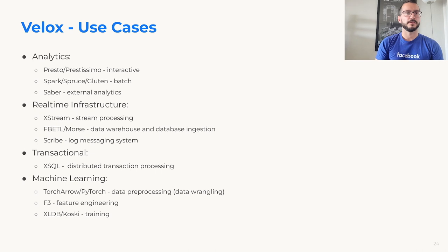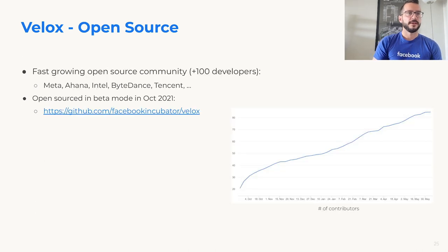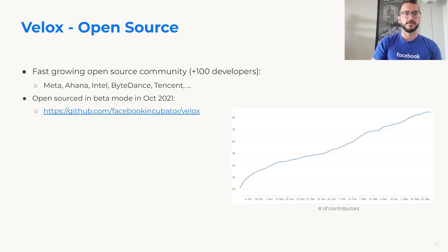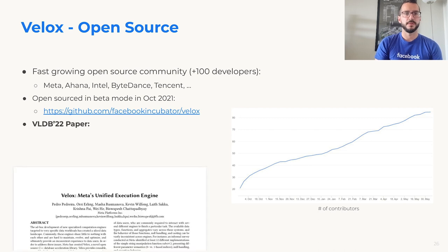As mentioned before, Velox is open source. We have a fast-growing open source community — at this point more than 100 developers from Meta and other companies contributing to Velox. Velox was open sourced about six to seven months ago, and here's a link to the GitHub repo. We also recently published a paper at VLDB 2022, which will be available in early September.